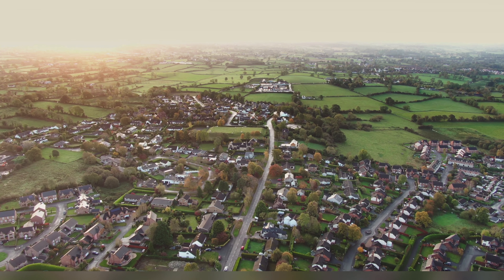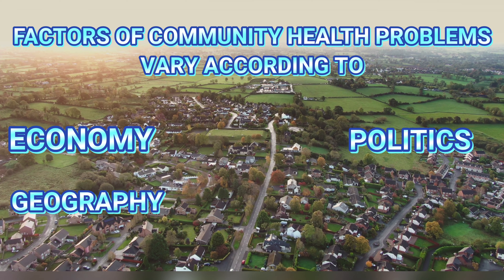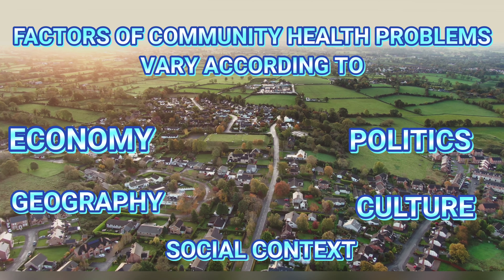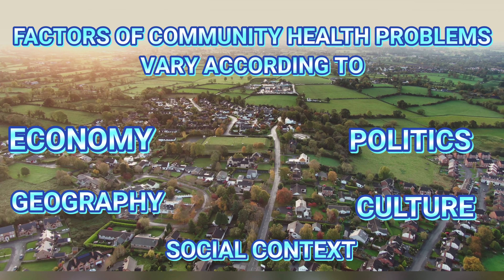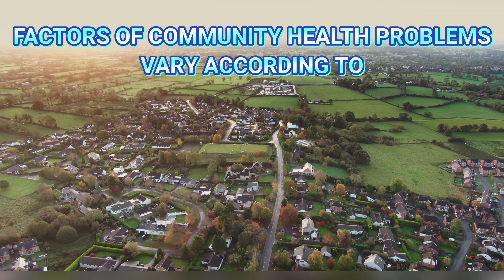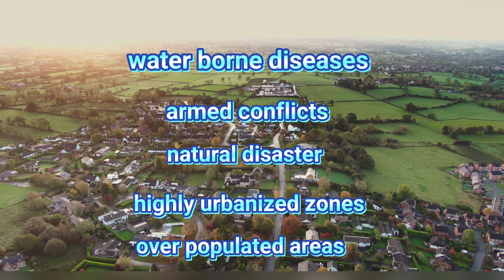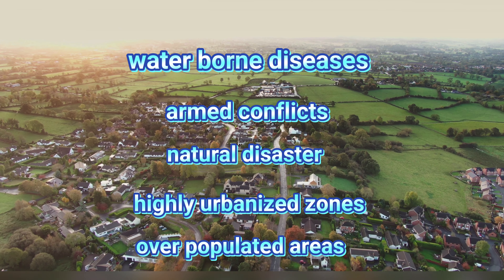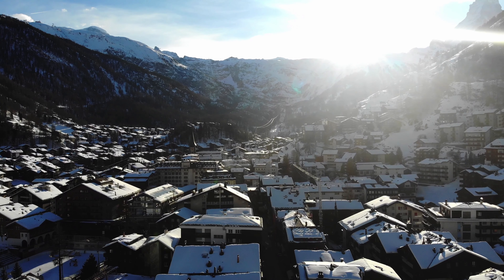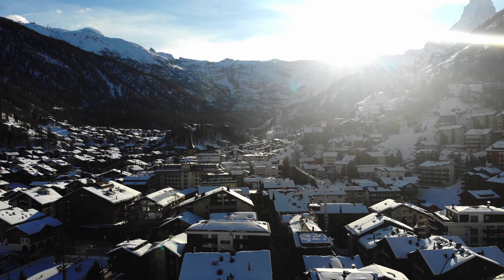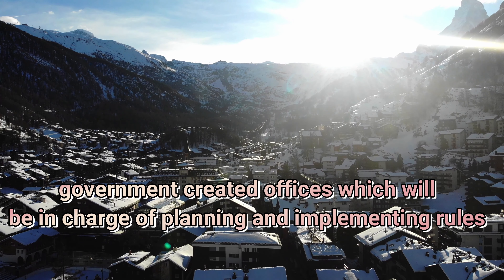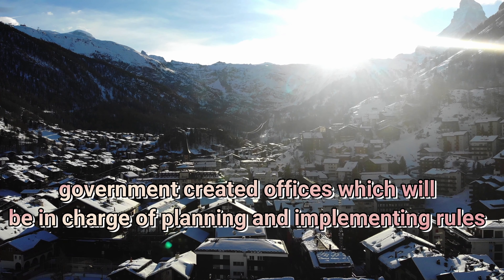Community health problems vary according to factors like economy, politics, geography, culture, and social contexts. There are places which experience community health problems such as waterborne diseases, armed conflicts, natural disasters, highly urbanized zones, and overpopulated areas. In this regard, the government has created an office in charge of planning and implementing rules and regulations to address these community health problems.